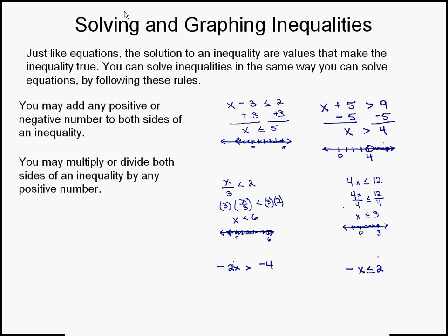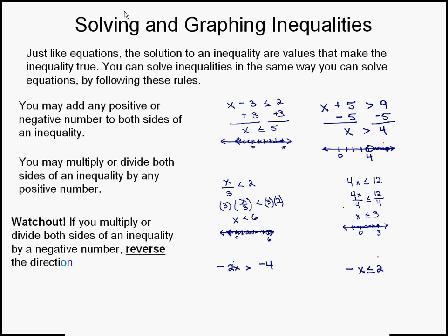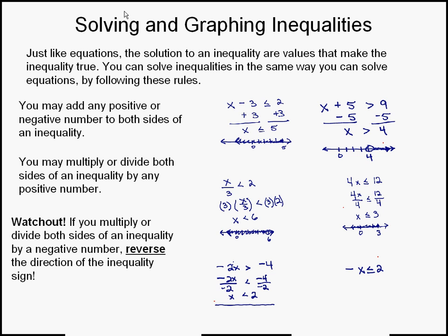The thing to watch out for: if you multiply or divide both sides of an inequality by a negative number, you need to reverse the direction of the inequality sign. For instance, if I have negative 2x is greater than negative 4, to solve this I divide both sides by negative 2. Notice I then reversed the inequality sign, and we wind up getting x is less than 2. It's going to be an open circle, highlighted going to the left.